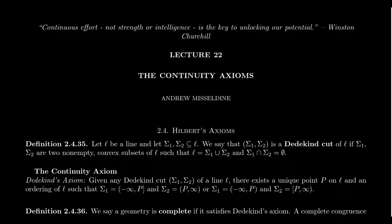Up to this point in our lecture series, we've gone through many different axiomatic systems for geometries, continually adding to it over and over again. We began with the incidence axioms, followed by the betweenness axioms, followed then by the congruence axioms. And in the mix of that, we did talk about parallel alternatives as well. All of this was based upon David Hilbert's axioms for Euclidean geometry. We just keep on stacking more and more axioms on there.